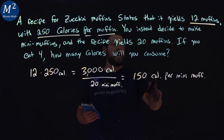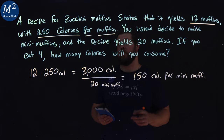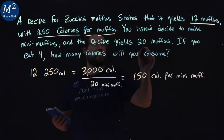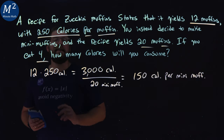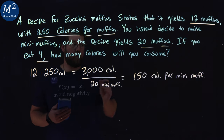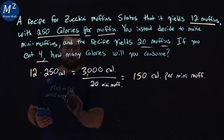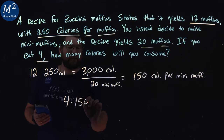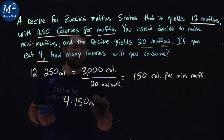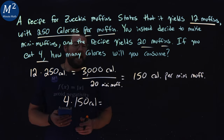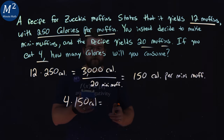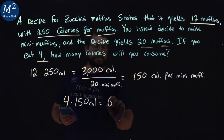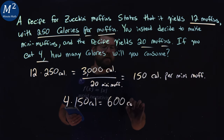So we have 150 calories per mini muffin. We eat how many? We eat four. So if we have four of those, we take four times 150 calories — multiply that by four — 600 calories.